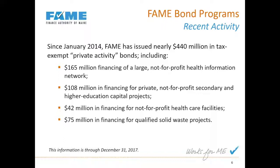There are limits on private activity bonds. Every state has a bond cap allocated based on a per capita calculation — somewhere in the $300 million range for Maine — divided among several state entities that can issue bonds for private activity purposes, including the Maine Housing Authority, the state treasurer, and the Maine Health and Higher Education Facility Authority. We work together with those other agencies to issue these private activity bonds.